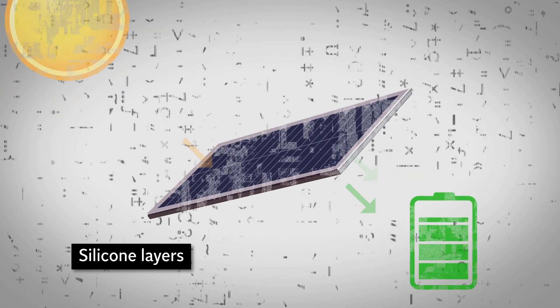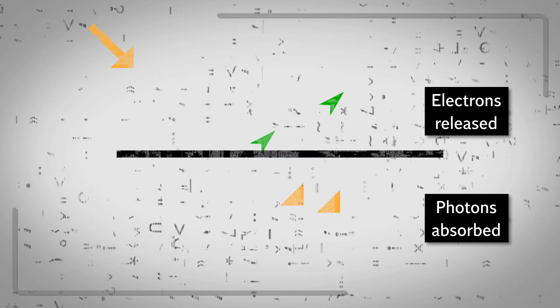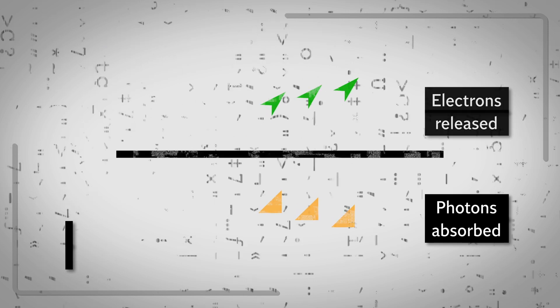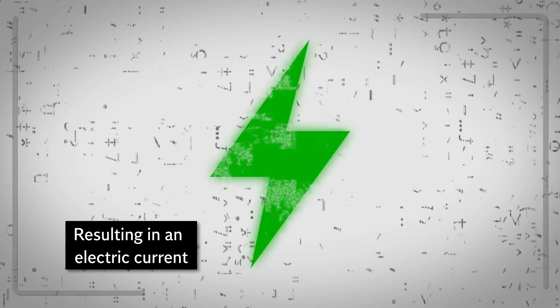Solar panels work by converting the light radiation from the sun to electricity, through a reaction inside silicon layers within the solar panel. This reaction is called a photoelectric effect, where photons of light are absorbed and then electrons are released. The free electrons are captured, resulting in an electric current that can be used as electricity.